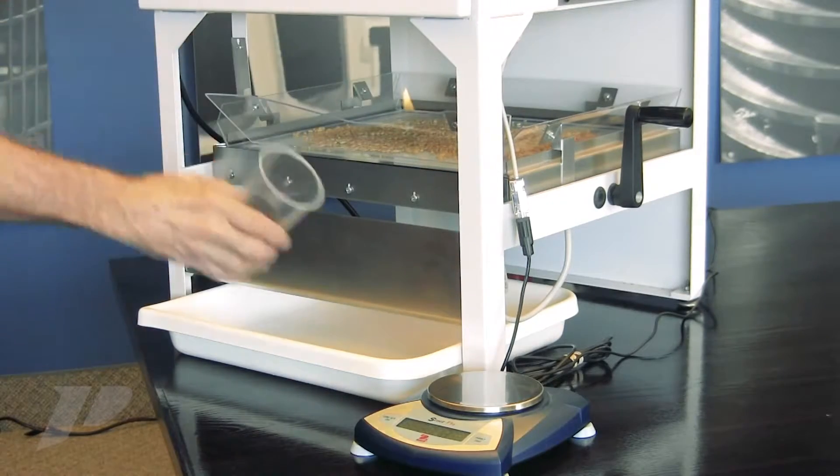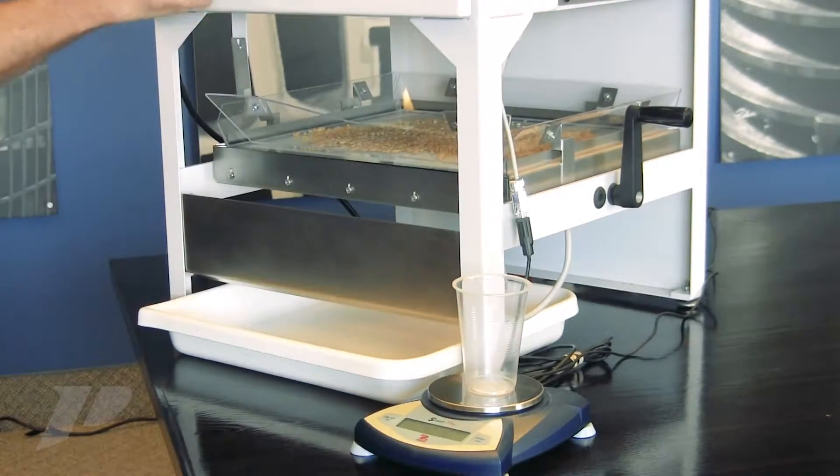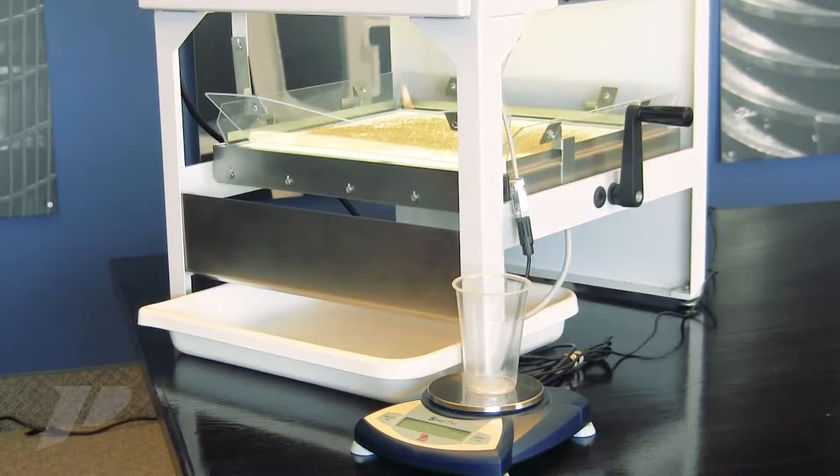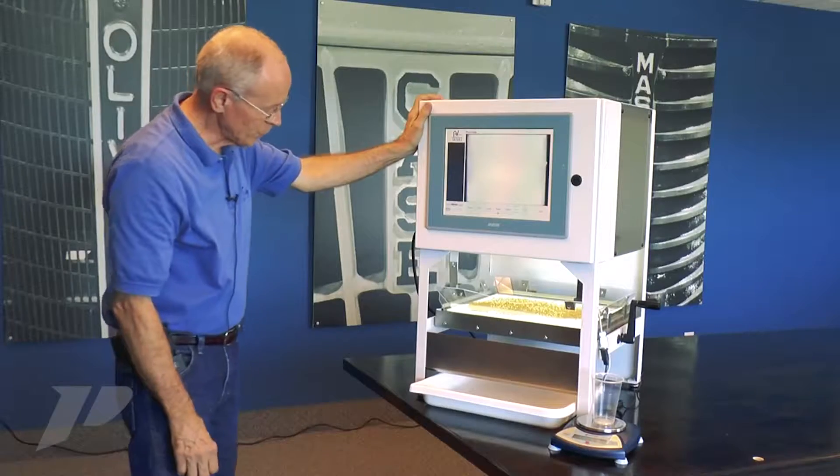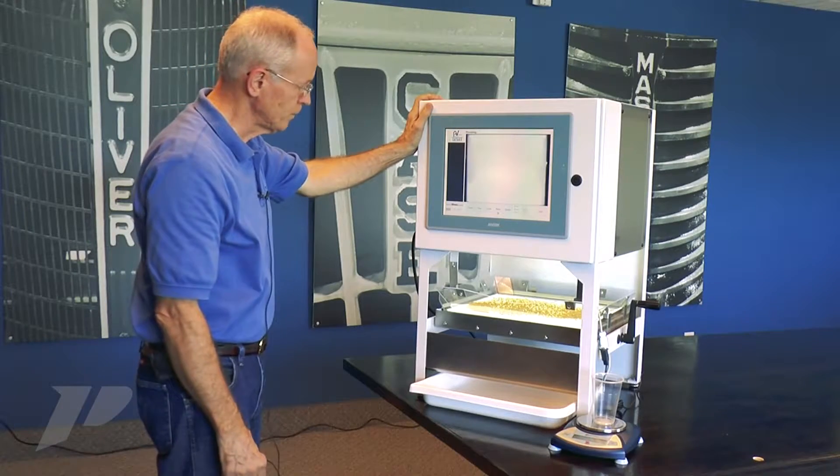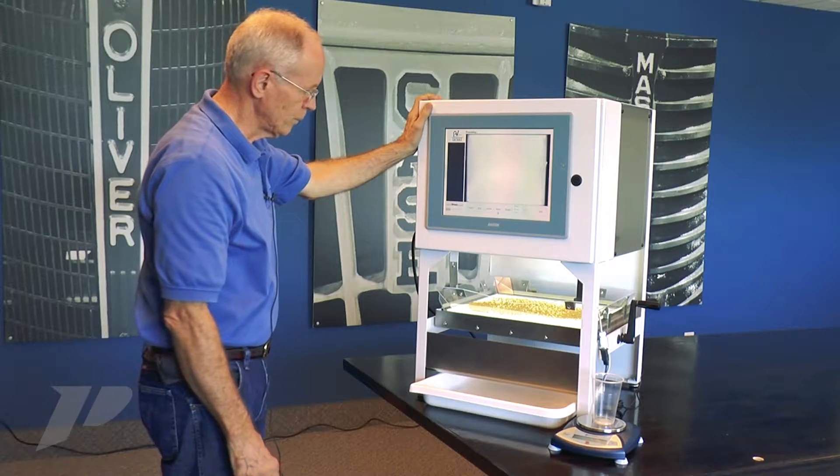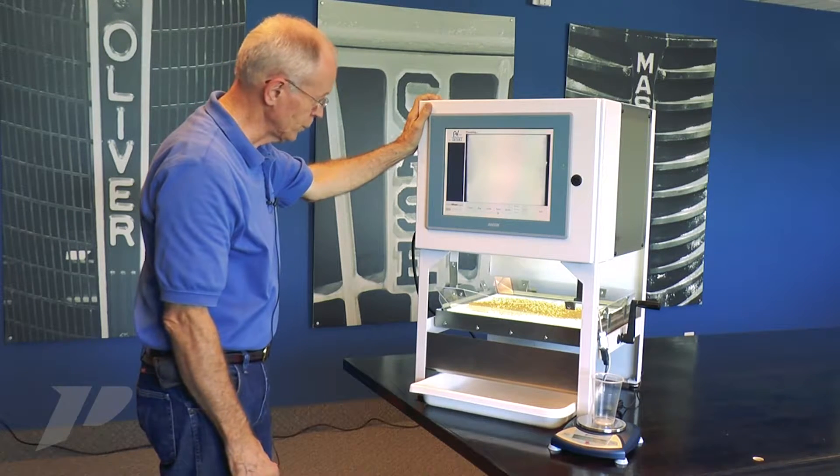When we click next, the stage will vibrate to monolayer the product and spread it out, and we'll take an image and process that image. We're going to count the kernels on the stage.